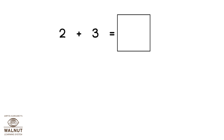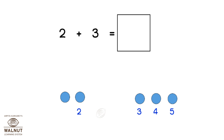How do we do 5 plus 3? We draw 2 dots. Then we draw 3 more dots. How many dots do we have? 2, 3, 4, 5. We have 5 dots. That is the answer.